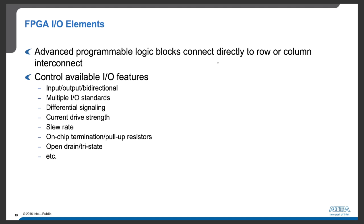FPGAs can talk to a variety of I/O elements. We can connect programmable logic blocks to I/O components through row and column interconnects. Available I/O features include input, output, or bidirectional modes, multiple I/O standards, differential signaling to ensure signal integrity over long paths, current drive strength control, slew rate control, on-chip termination pull-up resistors, and open-drain tri-state.